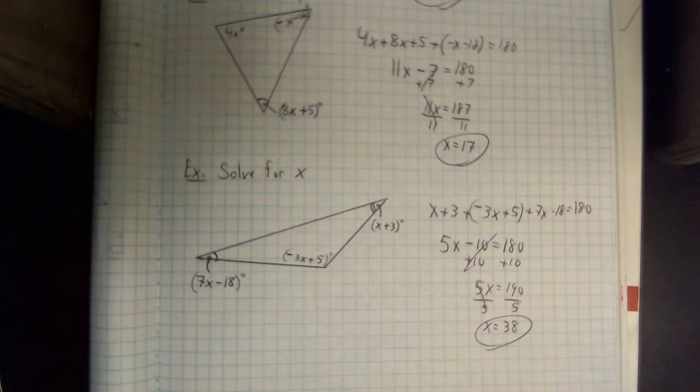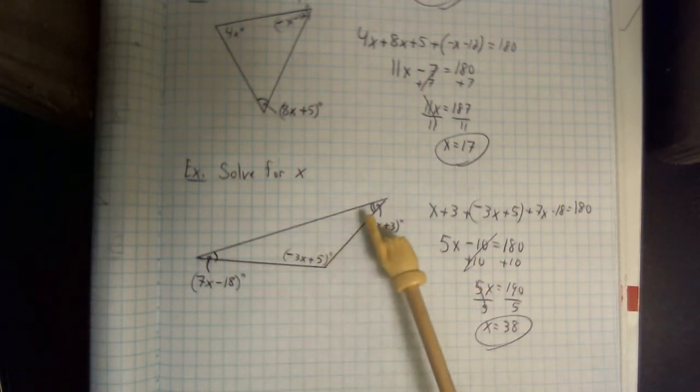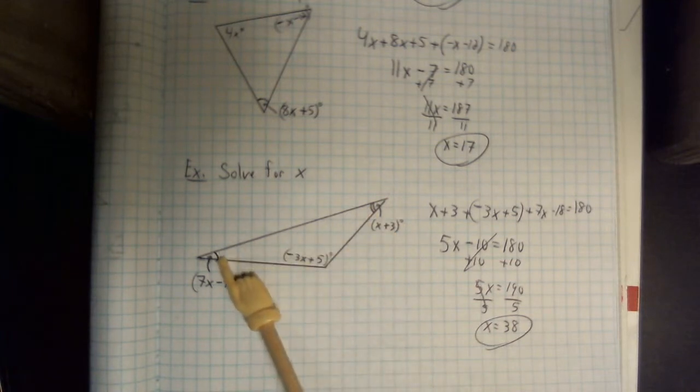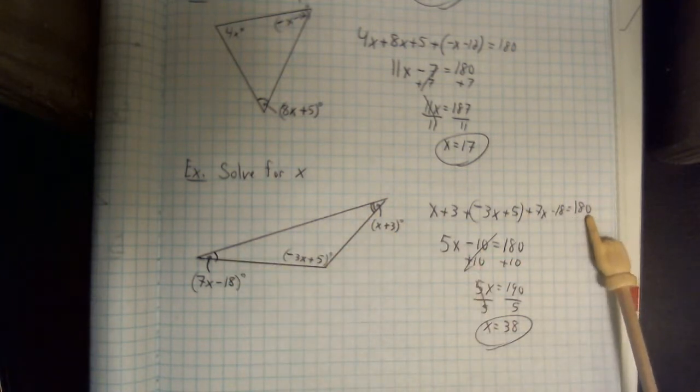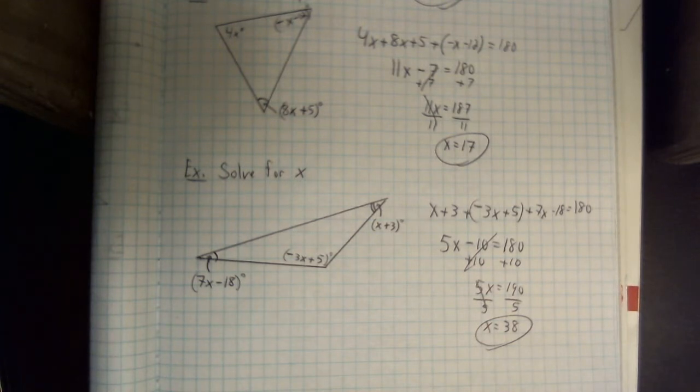So, it doesn't matter what the problem looks like. It doesn't matter how many variables and everything else they throw into there. All that we really are concerned with for these problems is that the interior angles of every triangle, when we add them, is going to give us a result of 180 degrees. This is a pretty easy concept to work with, but it's very important for us to do anything else in geometry because pretty much every shape that you can make that is a polygon is made up of triangles. So, it's very useful for us to know this.